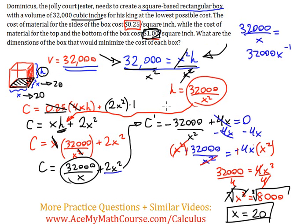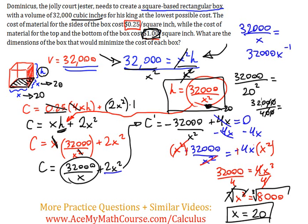We can determine h using h = 32,000/x². Plugging in x = 20: h = 32,000/400 = 80. So h is 80 inches.